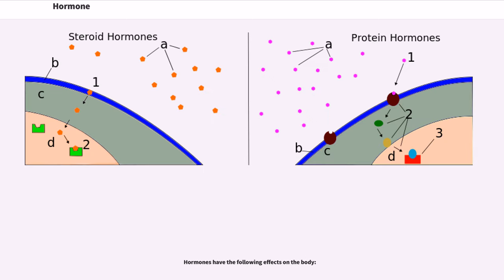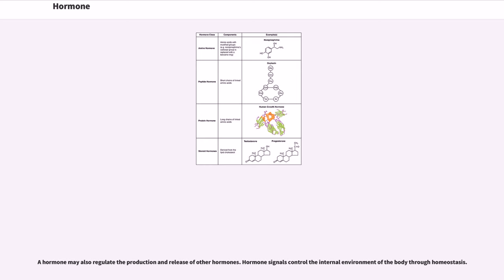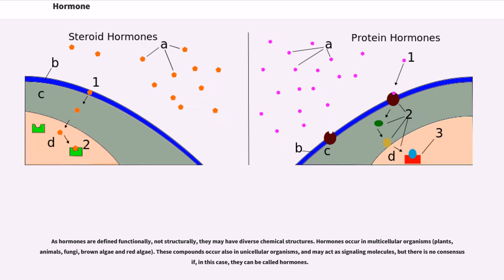Hormones have the following effects on the body. A hormone may also regulate the production and release of other hormones. Hormone signals control the internal environment of the body through homeostasis. As hormones are defined functionally, not structurally, they may have diverse chemical structures.